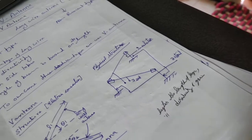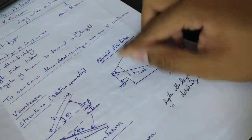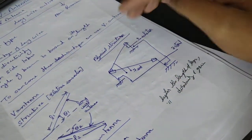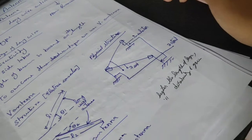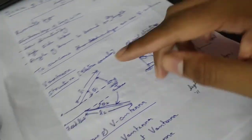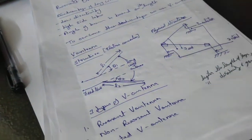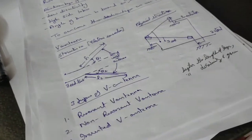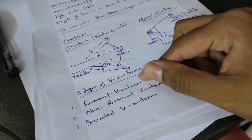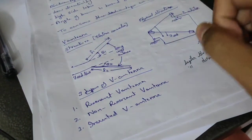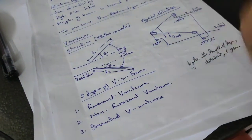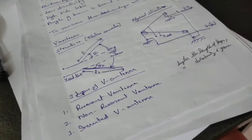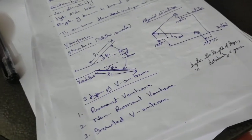An important point to note: the higher the length of the legs, the higher the directivity and gain. So the longer the long wire, the more the directivity and gain. The V antenna is classified into three types: resonant V antenna, non-resonant V antenna, and inverted V antenna.